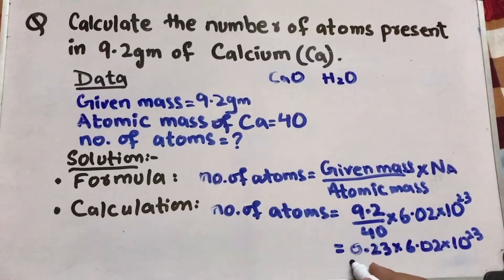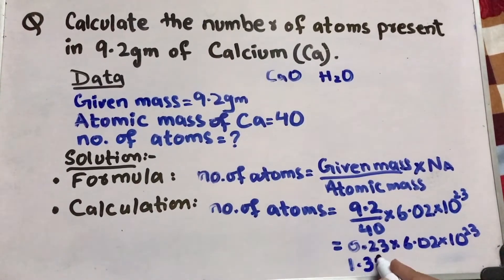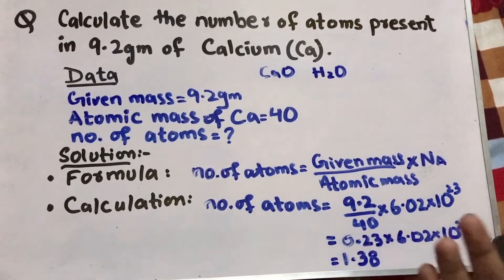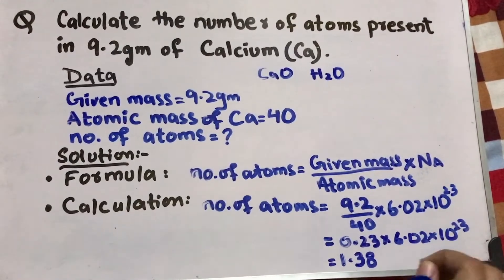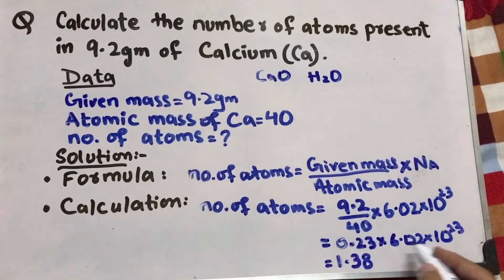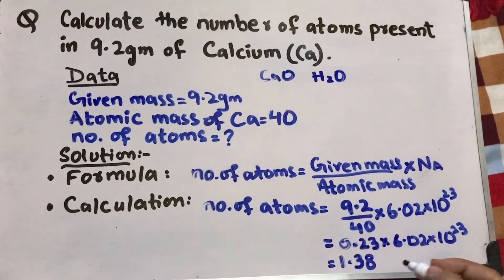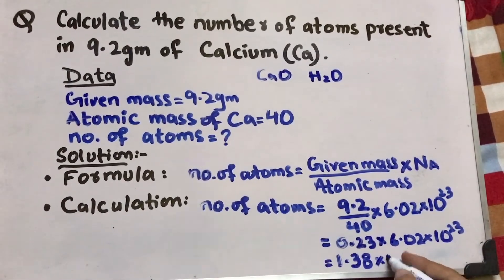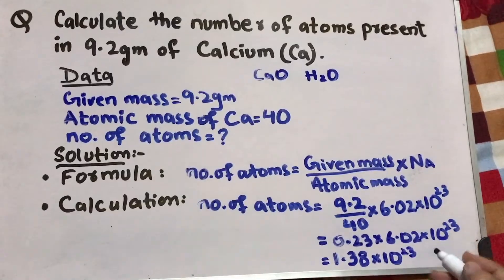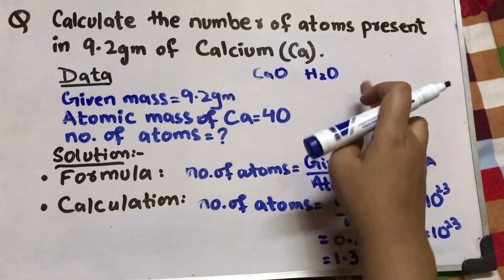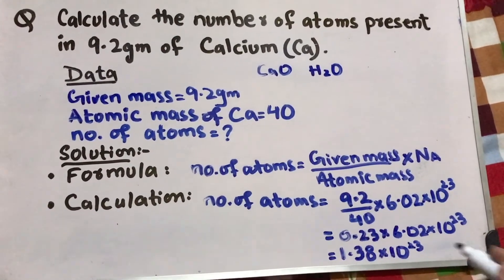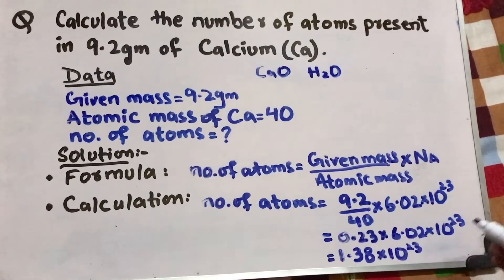When you divide both, you will get the answer 1.38. You can write 2 or 3 digits, but you have to write at least 2 digits. So 1.38 is the answer. We have not disturbed the exponent, we write it as it is. The exponent is 23. So the answer for this question is 1.38 times 10 to the power 23. These are number of atoms for calcium, or you can write atoms of calcium.